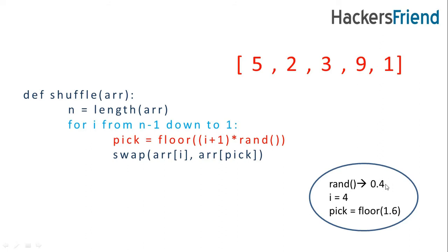The rand function can return any value ranging from 0 to 1. So suppose it returns 0.4, and what will happen here is if i is equal to 4 and random returns 0.4, then the pick value will become floor of 1.6 that is 1. So we will swap it with the second element, that is element at 1st position.